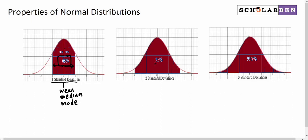95% of all the data lie within two standard deviations of that middle point, the mean, and 99.7% lie within three standard deviations on either side of the mean.